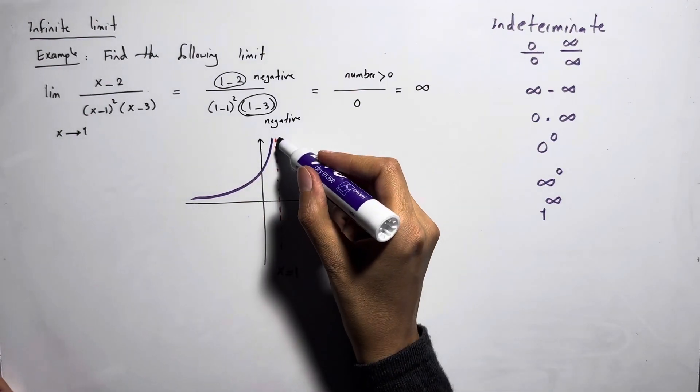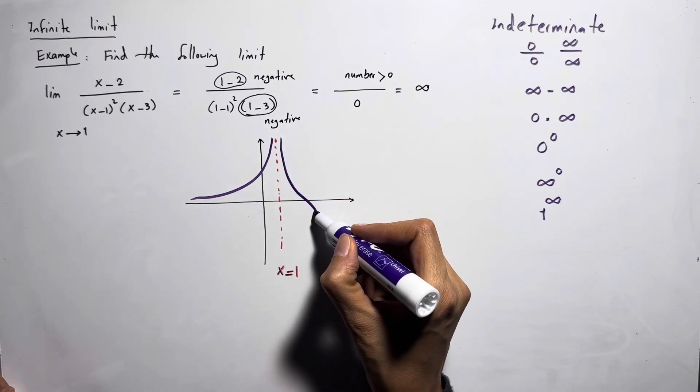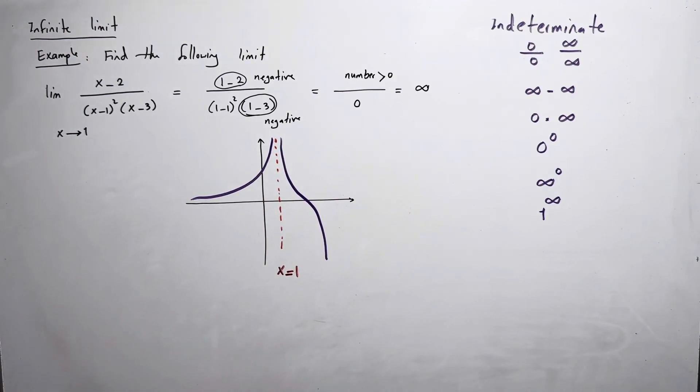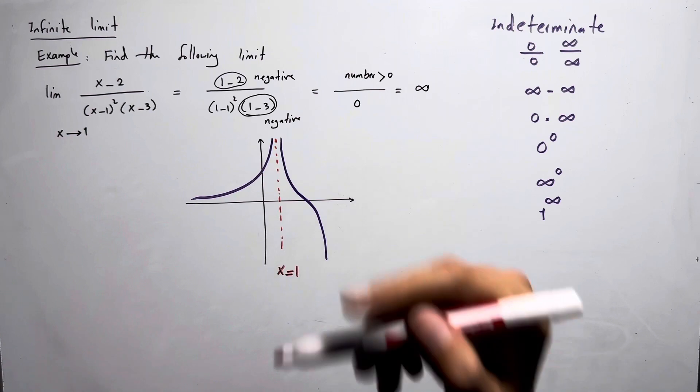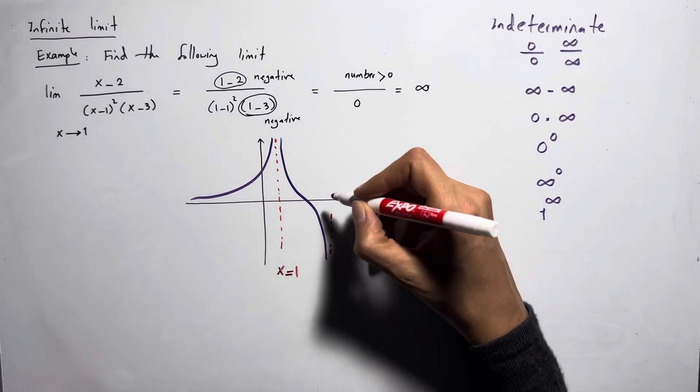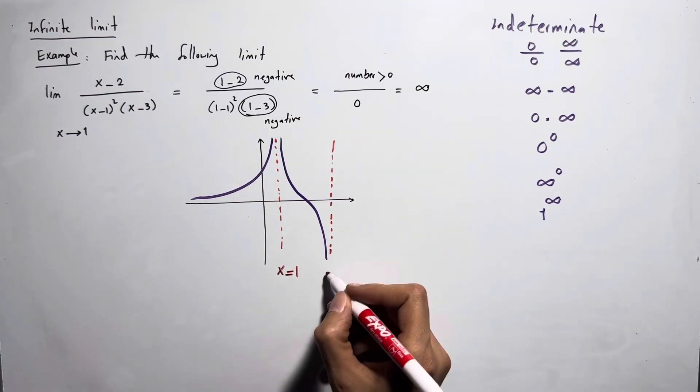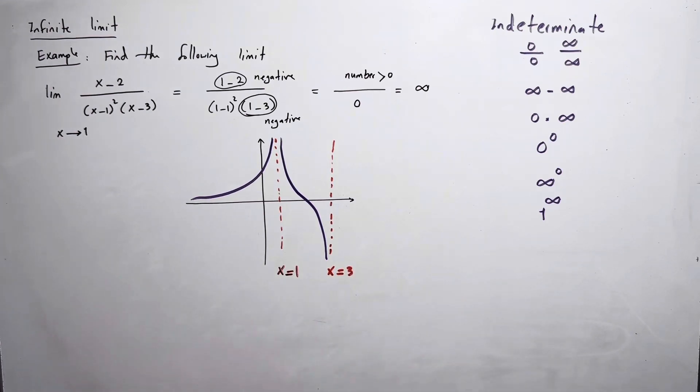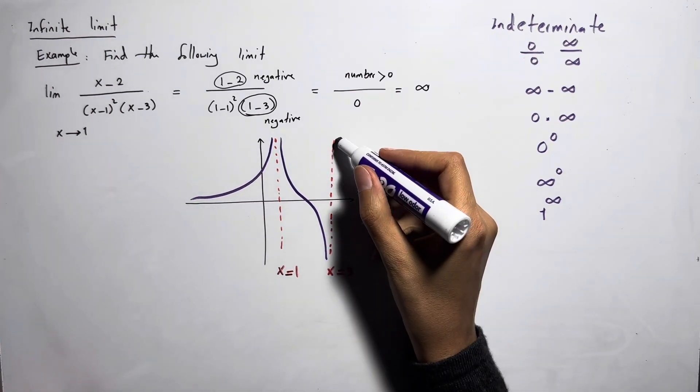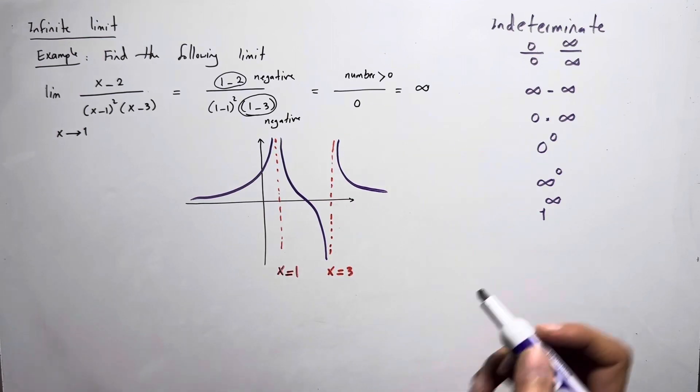The second piece of the graph, and then another vertical asymptote, which is x equals 3. And the rest of the graph behaves like this.